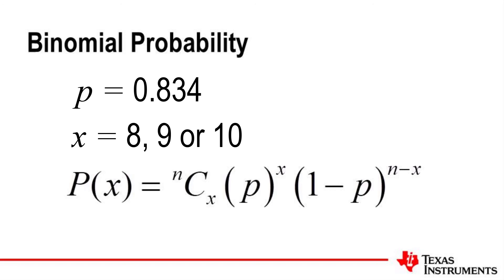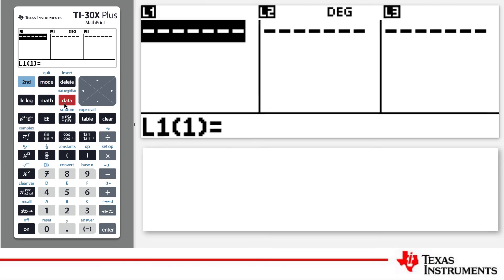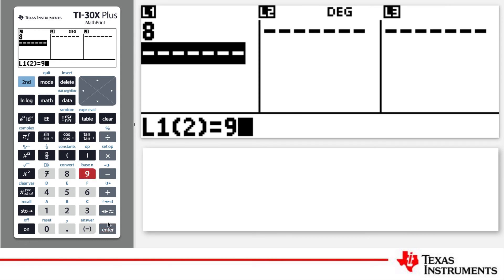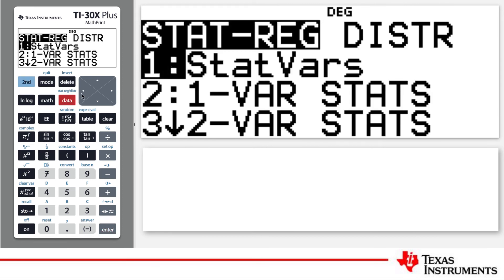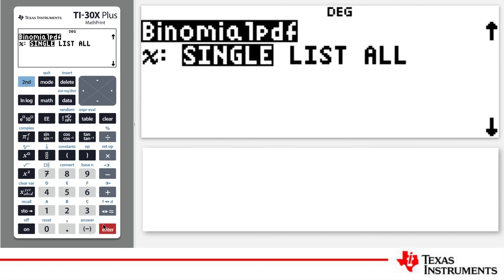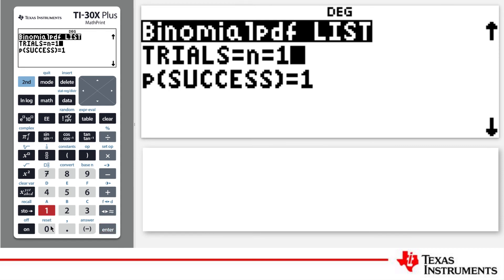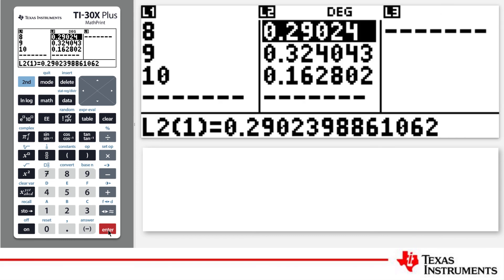So, returning to our calculator, I am going to generate the probability for 8, 9 or 10 successes. I will store these values in list 1. Now, I will use the binomial probability density function and select the list option. We have 10 trials. The probability of success in any one of these trials is 0.834. List 1 contains our favourable events, so the results of these calculations will be pasted in list 2.